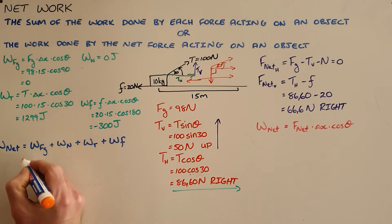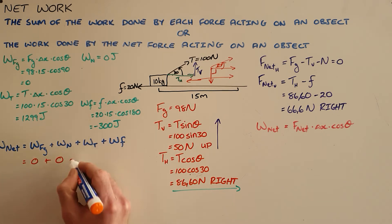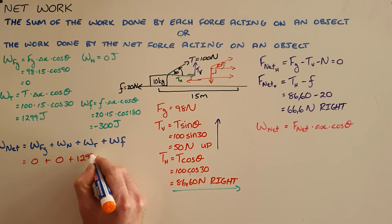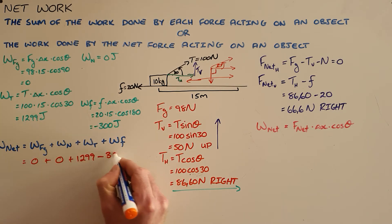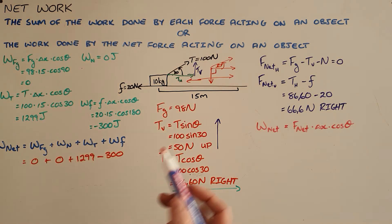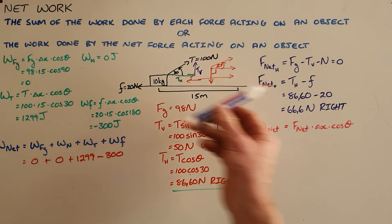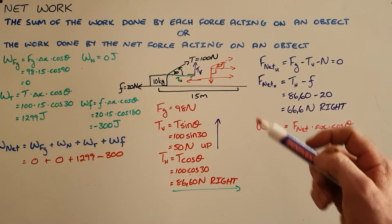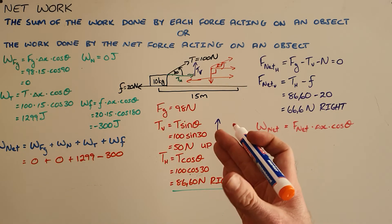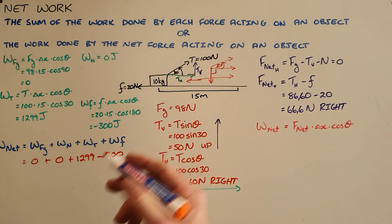So what we can see in the net work done here, it is the sum of all of the forces acting on the object. The work done by the gravitational force is zero, the work done by the normal force is zero, the work done by the tension force is 1299 joules, and the work done by the frictional force is negative 300 joules. This should make sense because the force pushing it to the right is adding energy while the frictional force is slowing it down, making it more difficult, therefore removing energy.